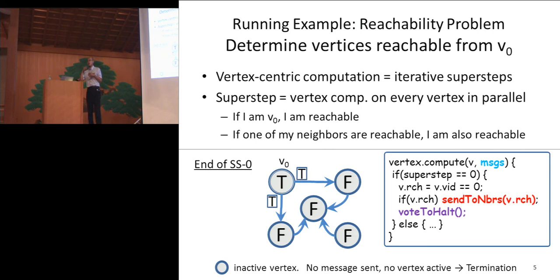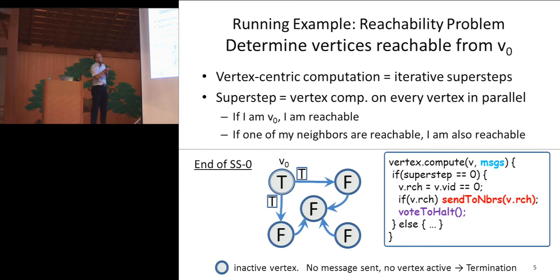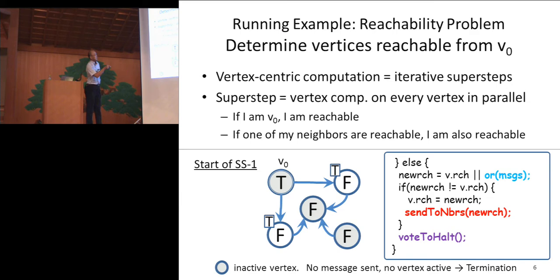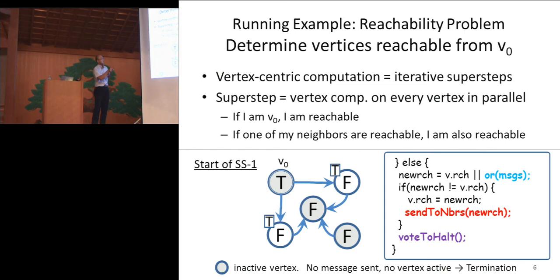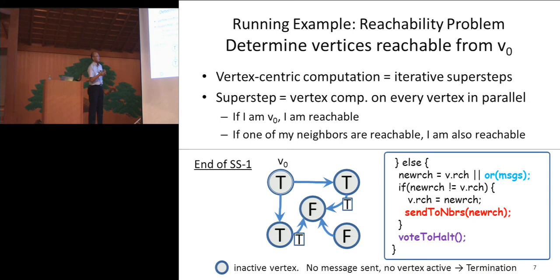Vote-to-halt is a mechanism to terminate the whole computation. If a vertex calls vote-to-halt, then it becomes an inactive state. If there is no message sent and there is no active vertex, then the whole computation terminates. Here we have some messages, so the computation continues. In the next super step, this vertex and this vertex have messages, so they do computation. This vertex knows that it has a reachable neighbor, so it updates its value to true. Similar to the previous super step, it sends true to its neighbor so that the neighbor can know it has a reachable neighbor. These two call vote-to-halt, but we have messages so the computation continues.